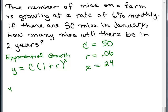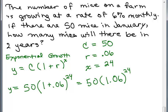So we go ahead and just plug those numbers in here. So we've got 50 times (1 plus .06) to the 24th, which of course you could just write as 50 times 1.06 to the 24th.